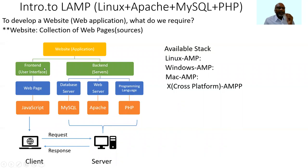The front end user interface is basically a web page or web document which can be designed and developed using certain programming languages such as JavaScript. At the back end, we have a set of software related to the servers. In order to store data on the computer or onto the requested interface, you require a database server. Along with the database server, you require certain software tools to send responses for the requests made from the user — these are serviced with the help of a web server, which is a software that enables us to provide responses to requests from the user.